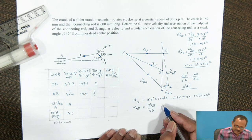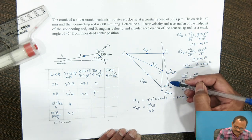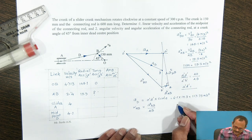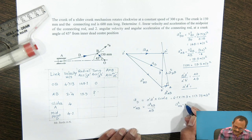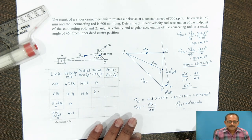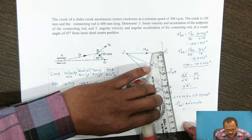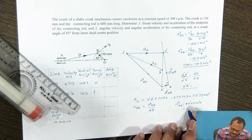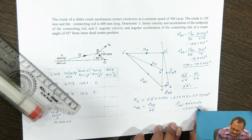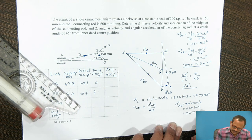The tangential component of AB can be obtained by measuring vector xA'. Measure the vector xA' and multiply by the scale. From measurement, vector xA' is equal to 5.2 centimeter, so 5.2 multiplied by 19.3 meter per second square gives the tangential component of A with respect to B as 100.36 meter per second square.